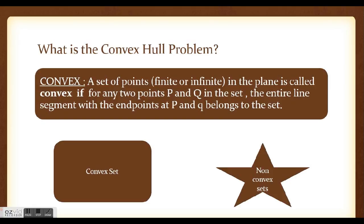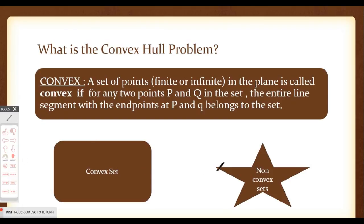Before understanding what the convex hull problem is, we should understand what a convex set is. It is a set of points in the plane where for any two points P and Q in the set, the entire line segment PQ belongs to the set. For example, if two points are chosen and the line segment connecting them falls outside the set, it is a non-convex set. If the line segment lies within the set, it is a convex set.